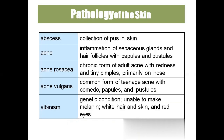Abscess is the collection of pus in skin. Acne means pimples — pustules or papules. Acne rosacea shows small pimples around the nose. Acne vulgaris is seen in teenage people with comedones, papules, and pustules. Albinism is a genetic condition where the skin is unable to make melanin — hair, skin color, and even the iris are white due to lack of melanin.